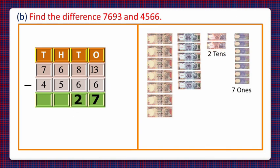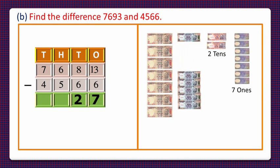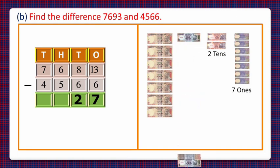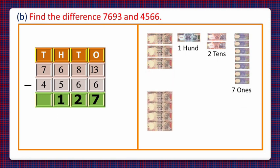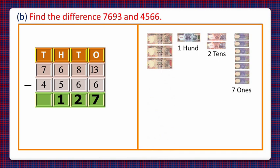On removing 5 hundreds from 6 hundreds, we are left with 1 hundred, which we write in the hundreds column. On removing 4 thousands from 7 thousands, we are left with 3 thousands, written in the thousands column. So our final answer is 3127.